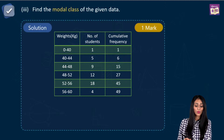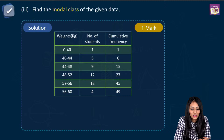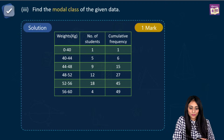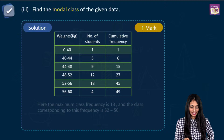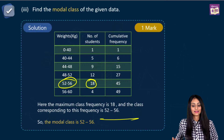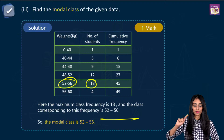For the modal class: the modal class has the highest class frequency. Looking at the data, the maximum frequency is 18, corresponding to the class interval 52 to 56. So the modal class is 52 to 56.